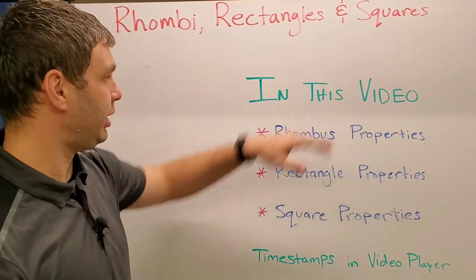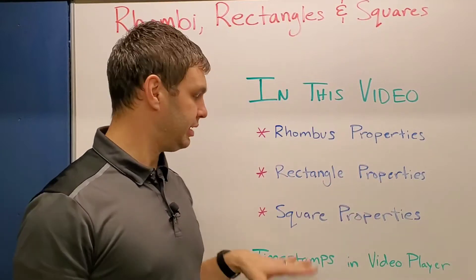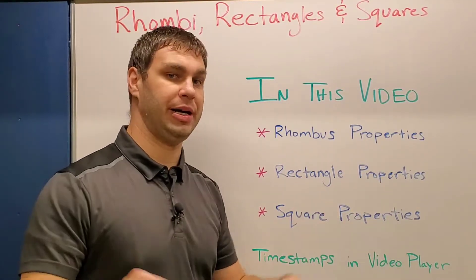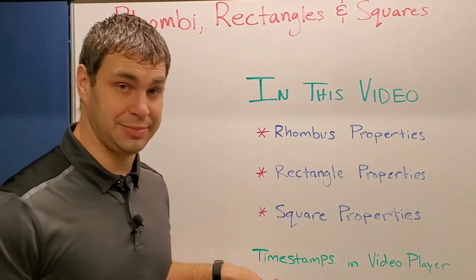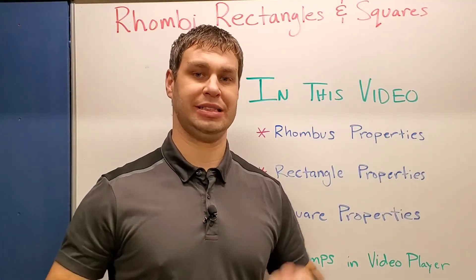Talking about rectangles, rhombuses and squares today. So in this video, what you're going to get is rhombus properties, rectangle properties, as well as square properties. And just a reminder, in the video player down below, there's timestamps, so you can drag a little red dot to whichever one you need. Or if you know all three, you can start watching right now. Let's get into it.